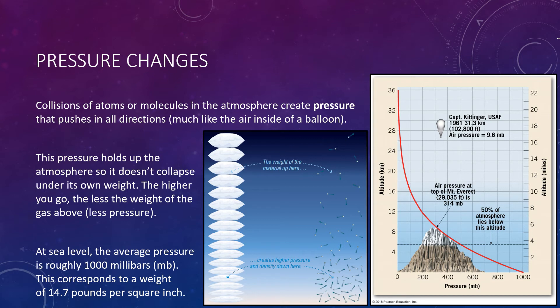To say that the atmosphere begins at Earth's surface and extends upward is obvious. However, where does the atmosphere end and where does outer space begin? There is no sharp boundary. The atmosphere rapidly thins as you travel away from the Earth until there are too few gas molecules left to detect.